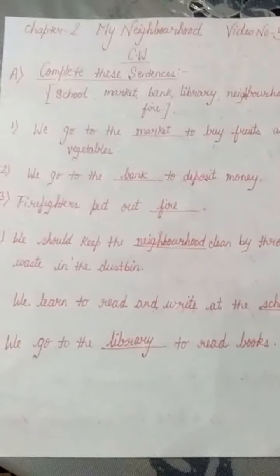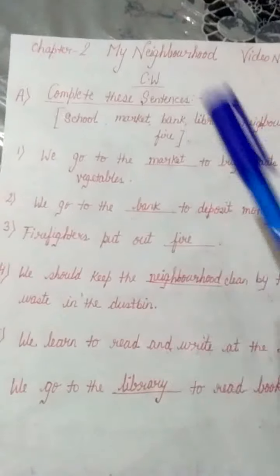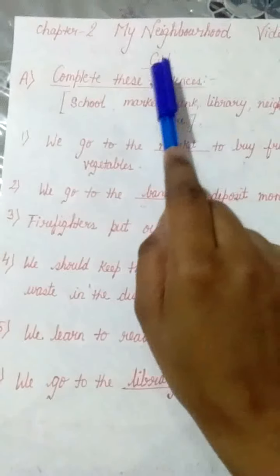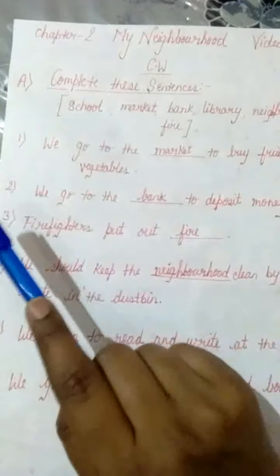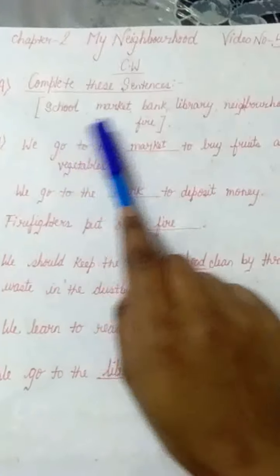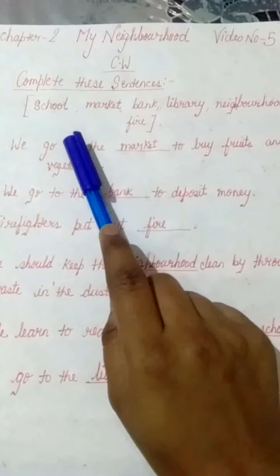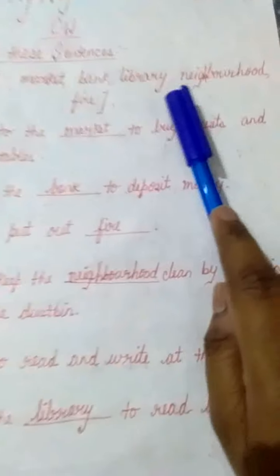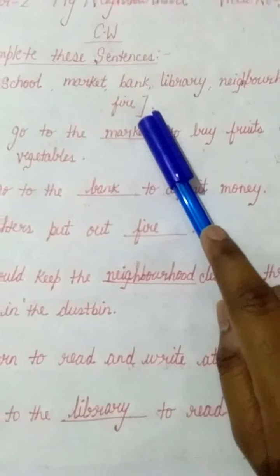Here I am going to give you some classwork. Please note down very carefully. Chapter 2, My Neighborhood — this is the classwork. Complete these sentences; a help box is given. The help box contains: school, market, bank, library, neighborhood, fire.